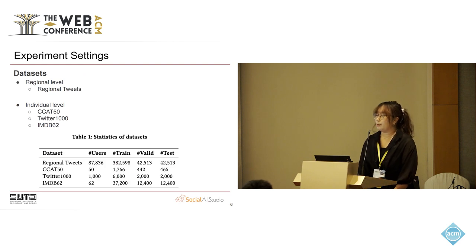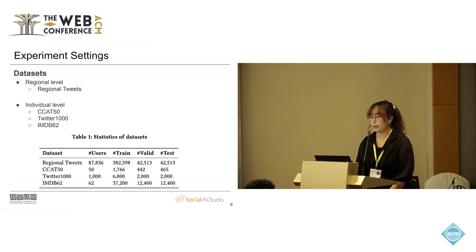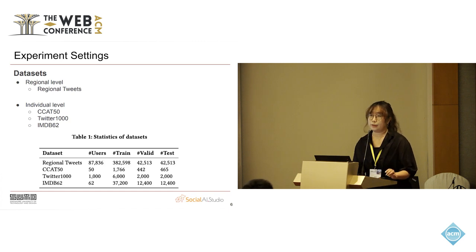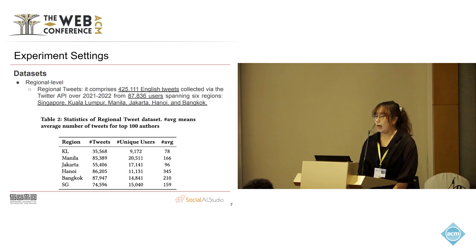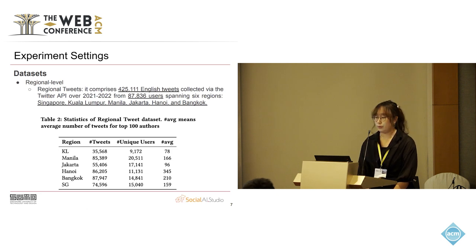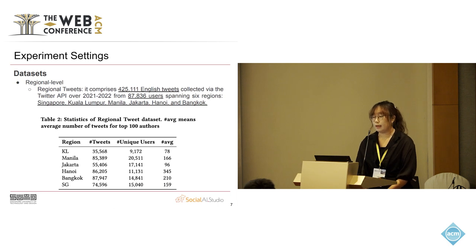In our experiments, we selected four datasets. One is the regional level dataset collected by our group, and the other three are individual level datasets, including CCAT, Twitter, and MDB — all widely used datasets in authorship attribution tasks. The regional level dataset was collected from Twitter, including more than 400,000 English tweets, covering 80,000 users across six different locations: Singapore, Kuala Lumpur, Manila, Jakarta, Hanoi, and Bangkok.